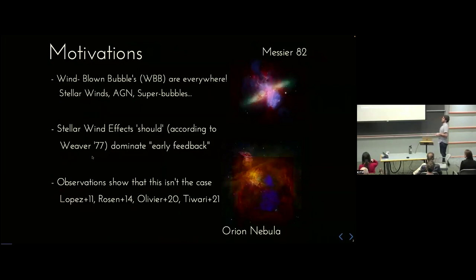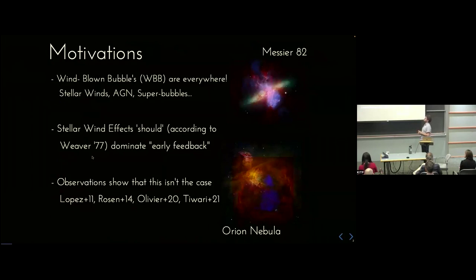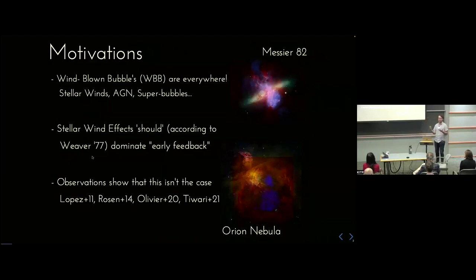Specifically, I think about bubbles blown by stellar winds from massive O and B type stars in star-forming regions. But you can also think about AGN winds, super bubbles, and a lot of what I'll discuss also applies to jets and even smaller scales. Why is it interesting? In the context of stellar winds, since the classical model, these should be the dominant factor determining star formation efficiency on GMC scales — but when you measure their effects observationally or include them in simulations, they seem much less important than expected. So what's going on?